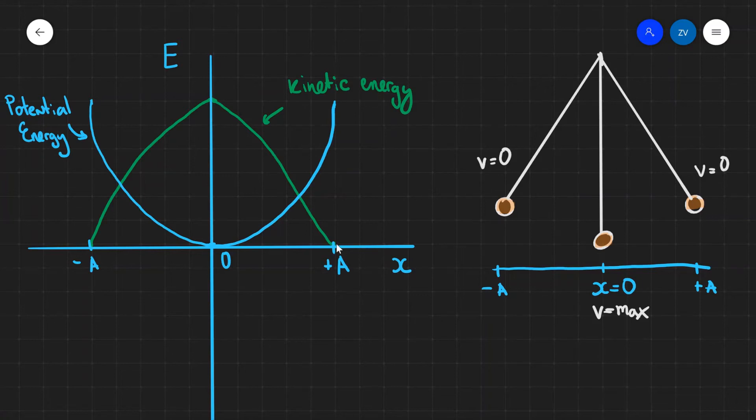Now the potential energy, in the case of a pendulum, that would be the gravitational potential energy, does exactly the opposite. So the potential energy is at a maximum at the amplitude because when the pendulum is here, there is more gravitational potential energy because there's a distance h and the gravitational potential energy is equal to mgh.